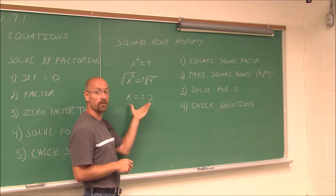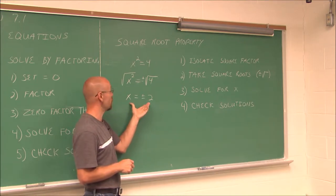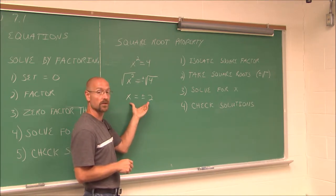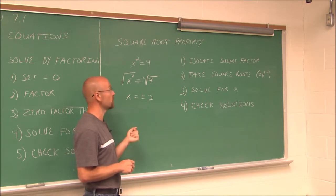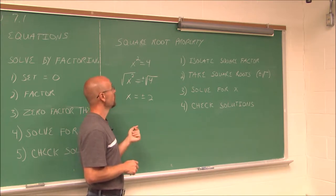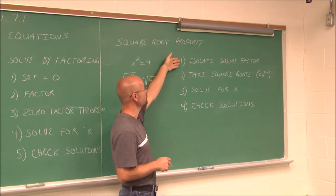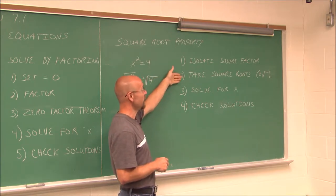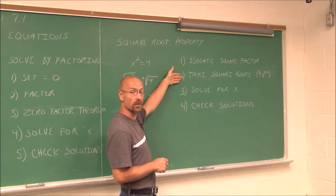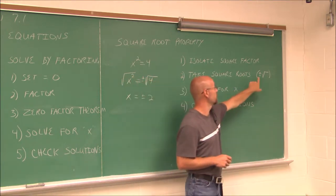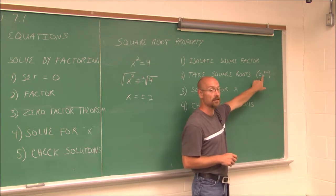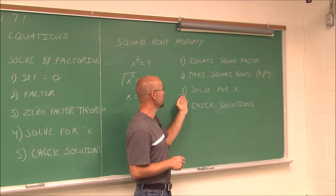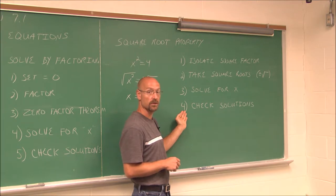This got us the exact same solutions as before — negative 2 squared is 4, positive 2 squared is 4, both work. To review the steps: isolate the squared factor, take the square root of both sides and don't forget plus or minus, then solve for the x term and check your solutions.